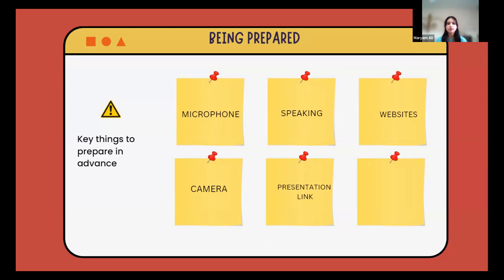Number two, practice speaking beforehand so you're not stuttering and you kind of know what you're going to be saying next. Number three, have your presentation link open so you're ready to present. And number four, have any website links or sites open so you're not faffing around and trying to open them while you're presenting. I would definitely recommend if you're sharing a website to have the hyperlink on your presentation so you can press on it and go straight to the website.